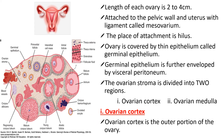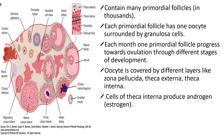The ovarian cortex is the outer portion of the ovary. This cortex region contains many primordial follicles — the number may be in the thousands. Each primordial follicle has one oocyte surrounded by granulosa cells. Each month, one primordial follicle progresses towards ovulation through different stages of development, forming a complete ovum.